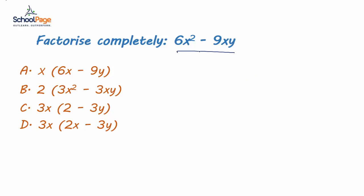6x square minus 9xy can be simplified and written as 3x into 2x minus 3x into 3y.